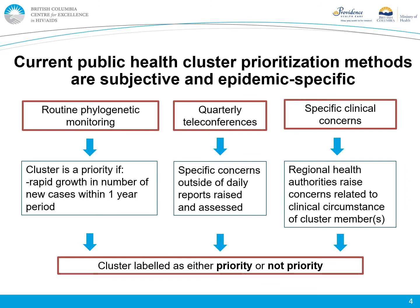Once we identify transmission clusters, we are still left with the problem of deciding which are most important to direct public health resources towards. What's shown here is the method public health currently uses to solve that problem in British Columbia. Routine phylogenetic monitoring gives experts the chance to highlight clusters experiencing rapid growth within a short period of time. Additionally, quarterly teleconferences are a chance for experts to discuss routine monitoring results and raise more specific concerns not covered in daily reports. Finally, specific concerns due to the clinical circumstances of a cluster member may be raised at any point by a regional health authority. It is via these three channels that a cluster may get labeled as priority or not priority, and this labeling can change at any time.